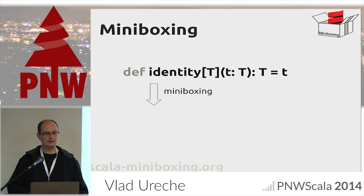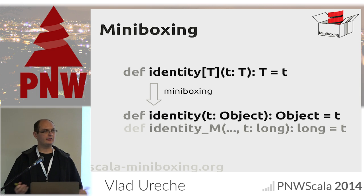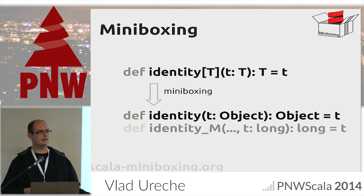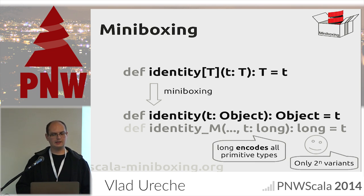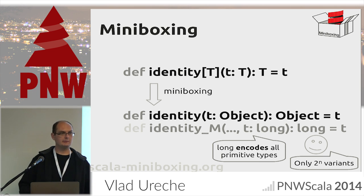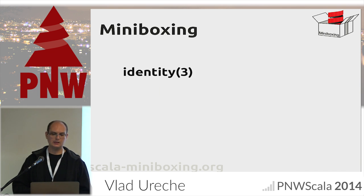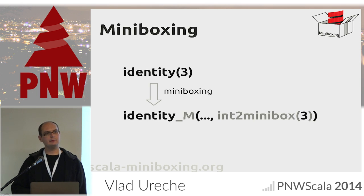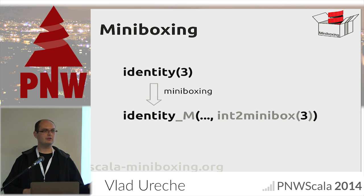With miniboxing, if we compile this method we still get the Object/Object variant, but we get just one other variant — one which takes a long integer and returns a long integer. With this, we get only 2 to the power of n variants of the code, which makes the library suddenly specializable. If we do identity of 3 with miniboxing, we get an int-to-minibox conversion — a conversion from a normal integer to a long integer.